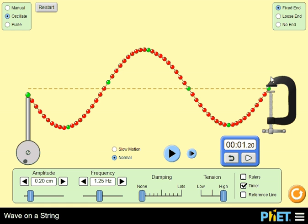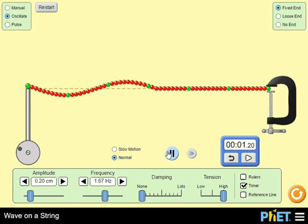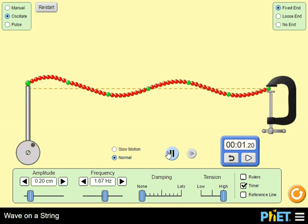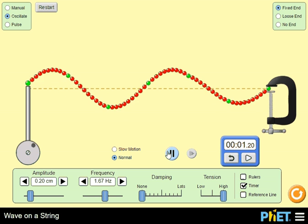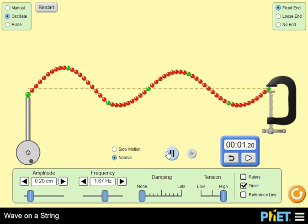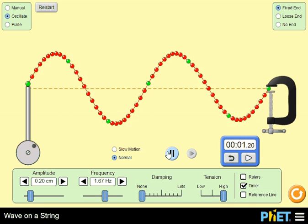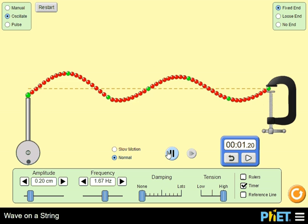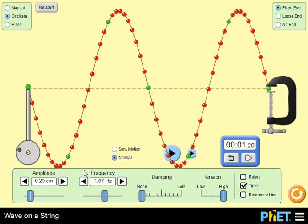Let's try one more frequency. The next frequency up should be 1.67. Let's try 1.67 and see what we get. Restart and wait a little bit, and here's the standing wave.